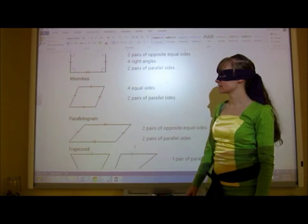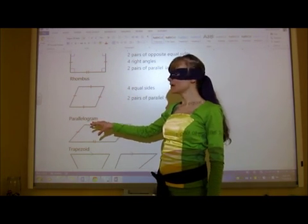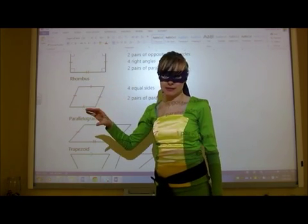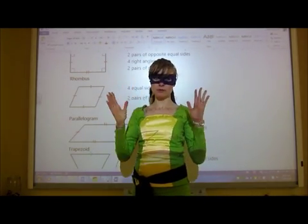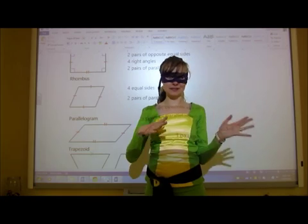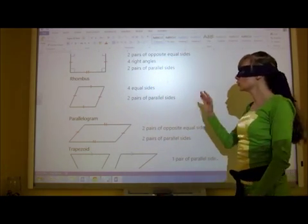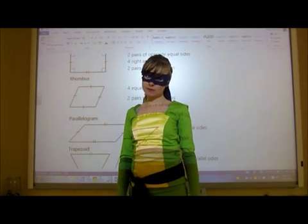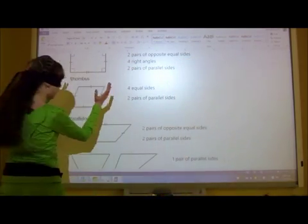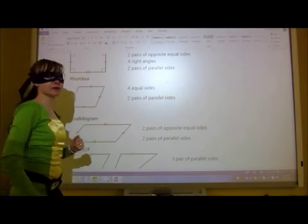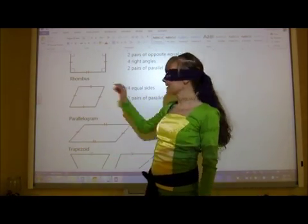Next up we've got a rhombus. A rhombus is very similar to the parallelogram in the way that a square is similar to a rectangle. A rhombus is like a slanted square, and a parallelogram is like a slanted rectangle. A rhombus has four equal sides and two pairs of parallel sides, and the opposite sides of the rhombus also have to be parallel — they'll never touch if we extend those lines.